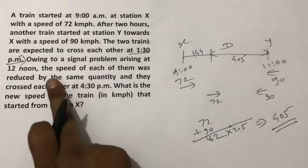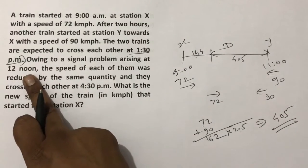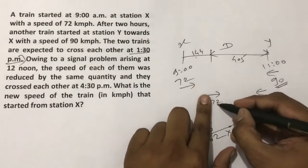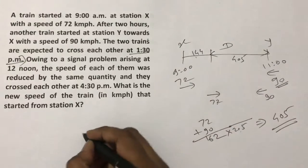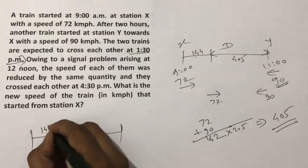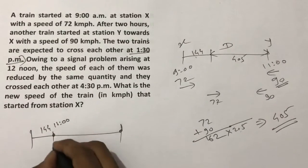Now, what we know is owing to a signal problem arising at 12 noon. Between 11 and 12, this train is moving at 90 kmph speed and this at 72 kmph speed. So at 12, it had already come 144 km at 11, and this one was just starting from here.